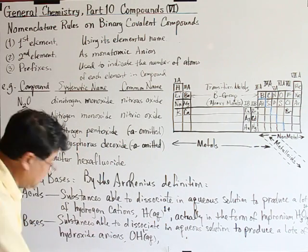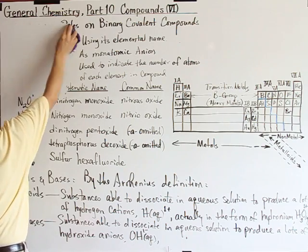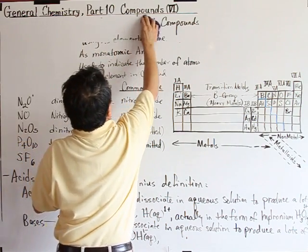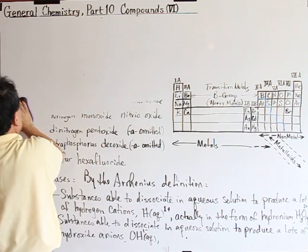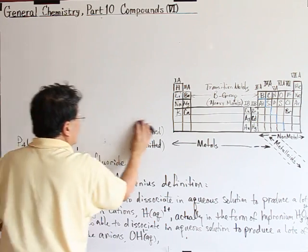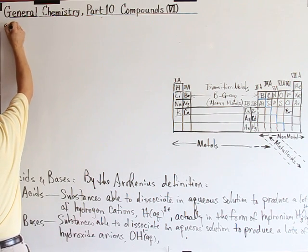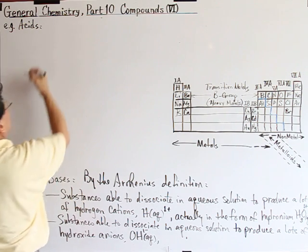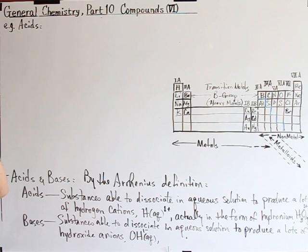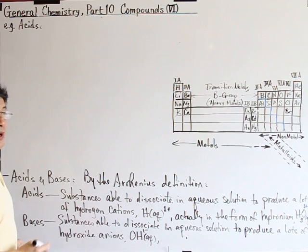That is the definition for the base. So if we understand these definitions, what are the examples? Let's give you the examples for acids. Now, there's one acid that's very common. It's the strongest out of three common chemical lab reagents we call strong acids. One is hydrochloric acid. HCl.